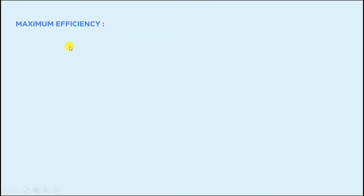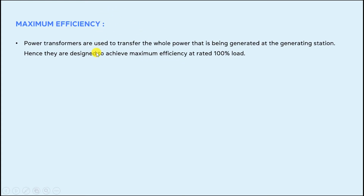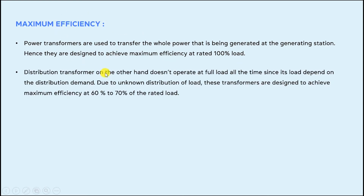One more basic difference is maximum efficiency. Power transformers are used to transfer the whole power generated at the generating stations, so they are designed to achieve maximum efficiency at 100% rated load. Distribution transformers, on the other hand, don't operate at full load all the time since their load depends on the distribution demand. These transformers are designed to achieve maximum efficiency at 60 to 70% of the rated load.